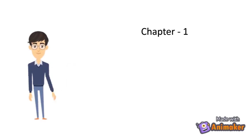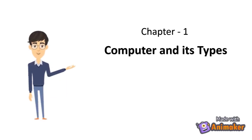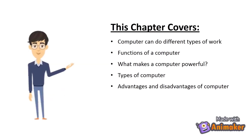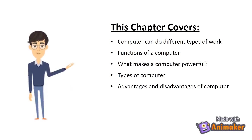Chapter 1: Computer and its Types. This chapter covers: computer can do different types of work, functions of a computer, what makes a computer powerful, types of computer, and advantages and disadvantages of computer.